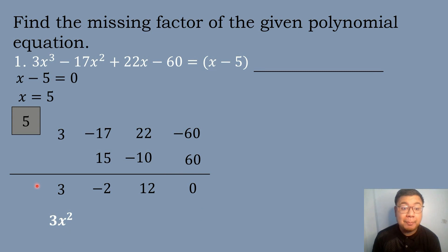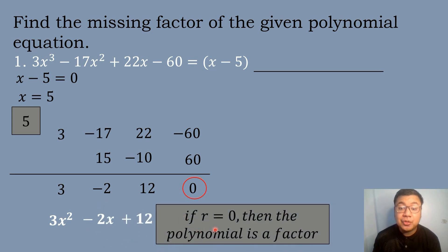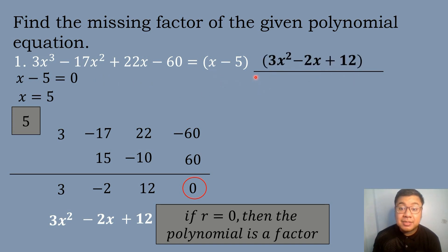We get the depressed equation. The leading term has coefficient 3 followed by x. Subtracting 1 from the highest degree of 3 gives x squared, so the leading term is 3x squared, followed by negative 2x plus 12, remainder 0. Since the remainder is 0, the polynomial is a factor. Therefore, the factors of 3x cubed minus 17x squared plus 22x minus 60 are x minus 5 times the quantity 3x squared minus 2x plus 12.